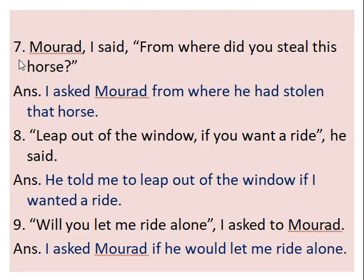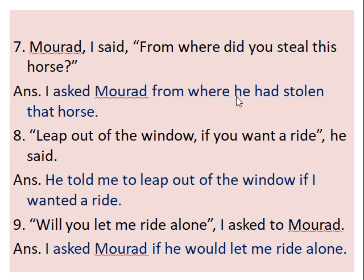Question 7: Murad, I said, from where did you steal this horse? I asked Murad from where he had stolen that horse. Here 'did' is past tense, and that's why we have made it past perfect. We also have to make it assertive. The simple technique to remember is that after the question word, just read the sentence: 'he had stolen that horse'. In this way you will get the idea whether it is interrogative or assertive.